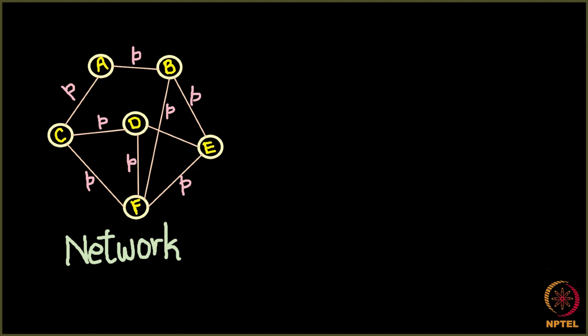So everything is same. Every edge is having the same probability. The only difference is in the layout of the network. Instead of the tree we have taken a proper network. Let's say it is connected to D also here and the network looks something like this.